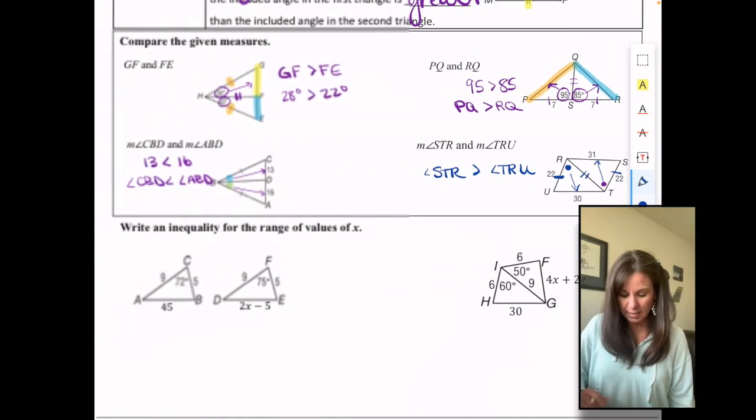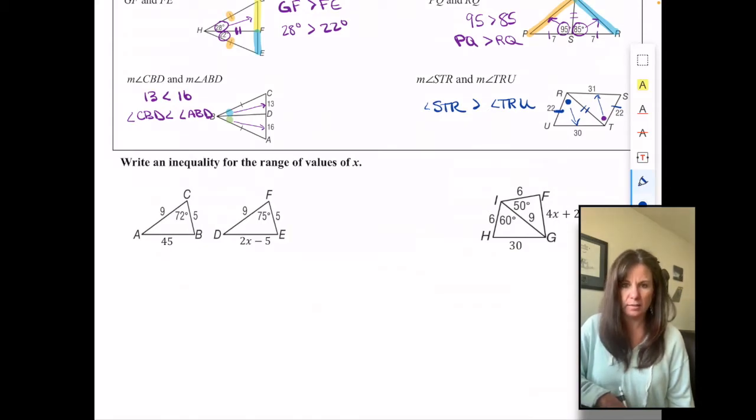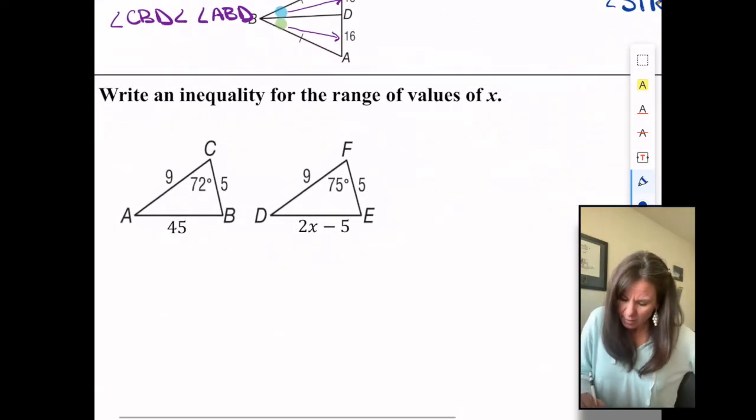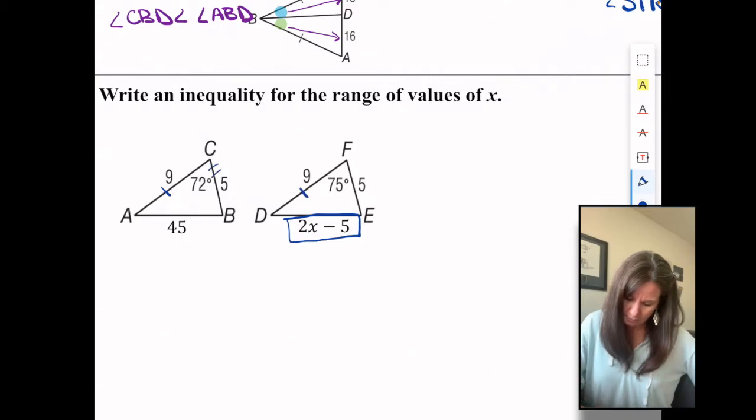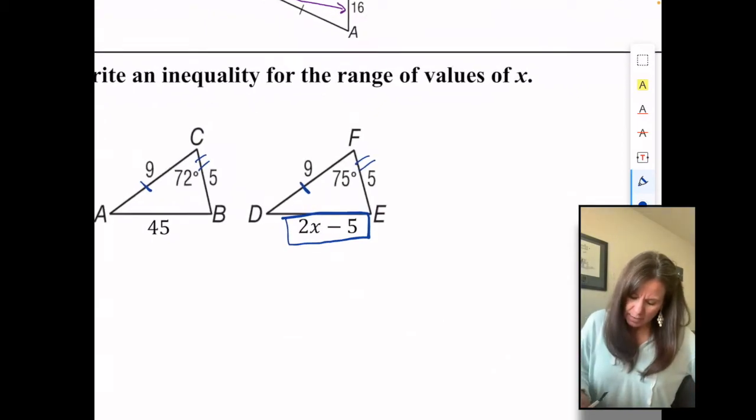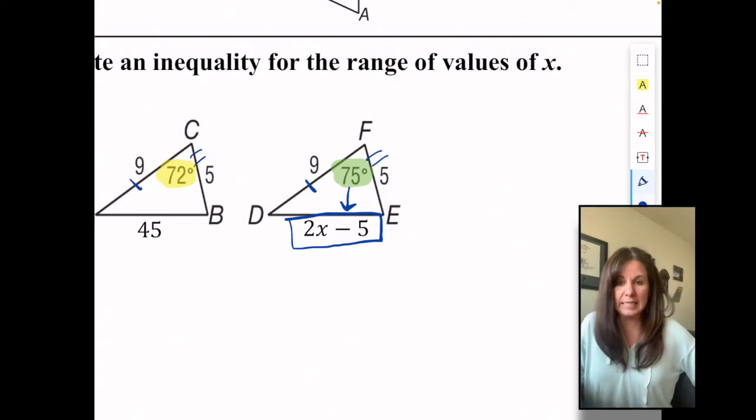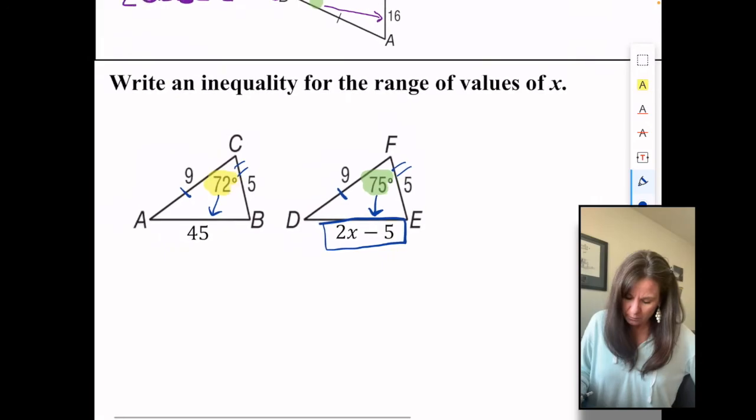Now this next part says, write an inequality for the range of values of X. What does that mean? I'll show you. So here we have X. It's right there. And we've got two triangles, corresponding sides that are congruent. Then we've got 75 on this triangle and 72 on this triangle, which means that the thing across from 75, DE, is bigger than what's across from 72.